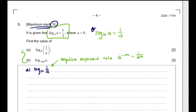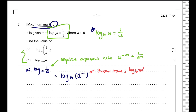Using this rule, we can say that log base 10 of 1 over A is same as log base 10 of A to the power of negative 1. Then we are going to use the power rule of logarithm, which is log base B of M to the power of N is same as N times log base B of M. Using this, we can rewrite this as negative 1 times log base 10 of A. Since log base 10 of A equals 1 over 3, this gives us negative 1 times 1 over 3, which is negative 1 over 3.